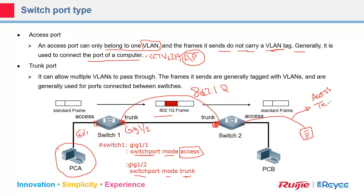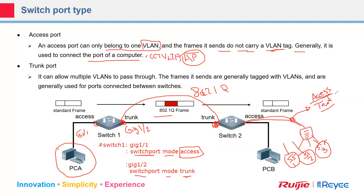Bonus question: if you are connecting an access point to a switch port, would that port be access or trunk? Considering you have multiple SSIDs — SSID 1, SSID 2, SSID 3 — and each SSID is on a different IP segment, the short answer is: as long as this link will carry more than one VLAN, it should be a trunk port.